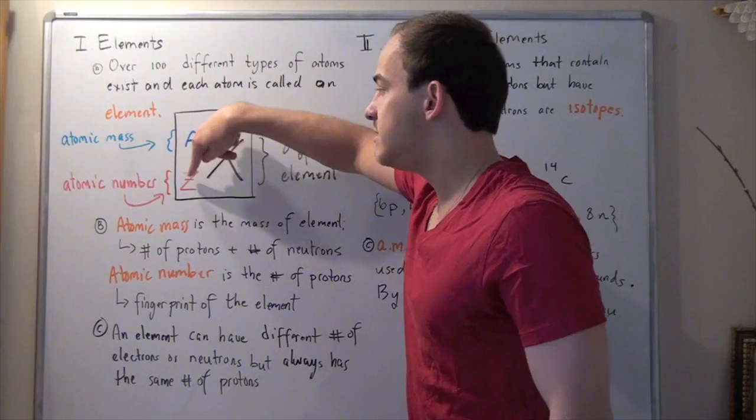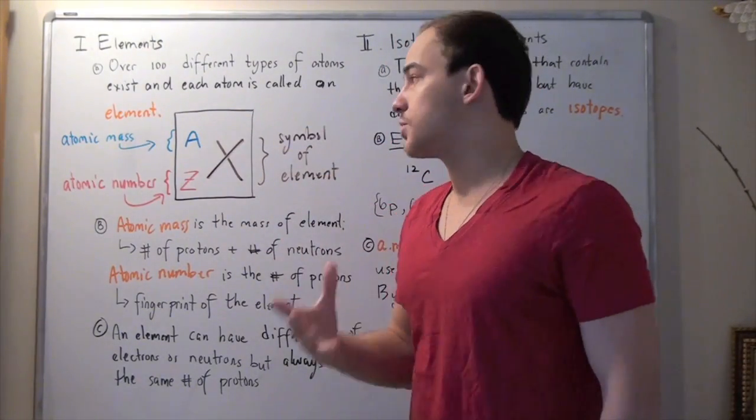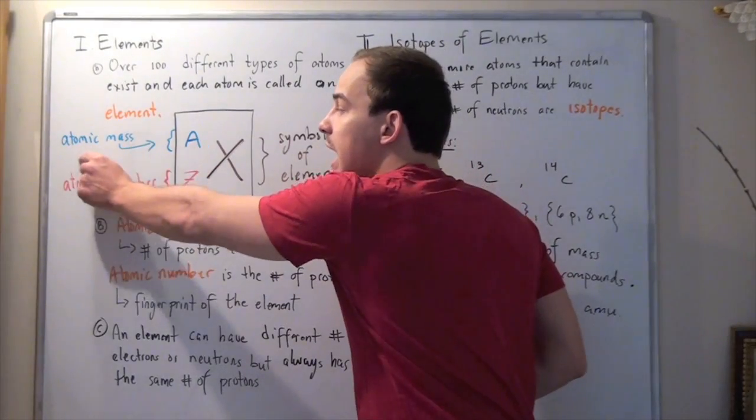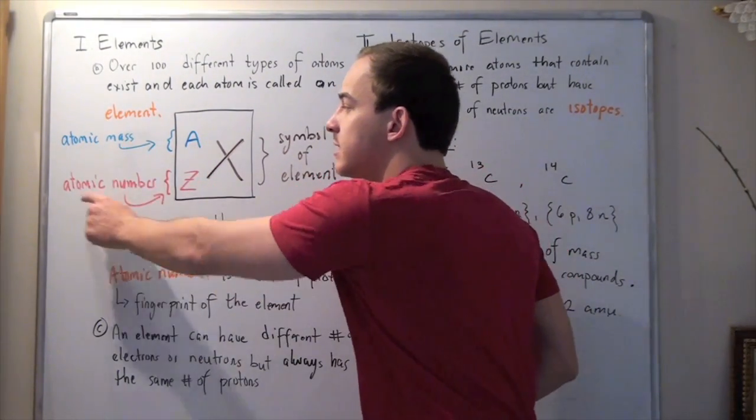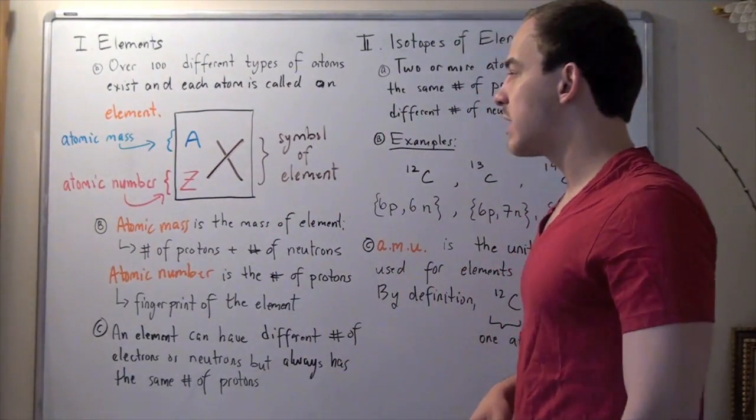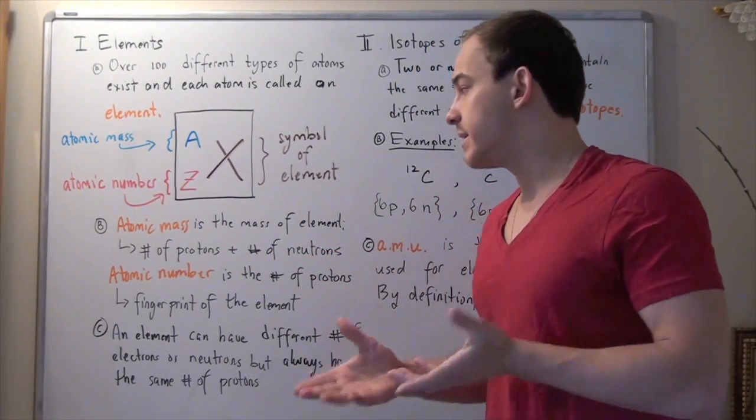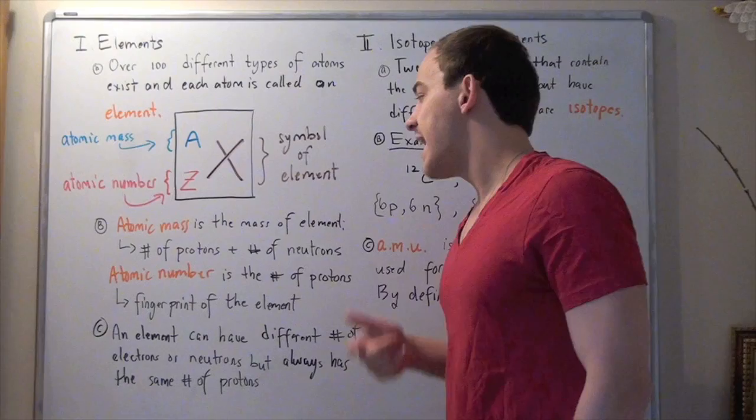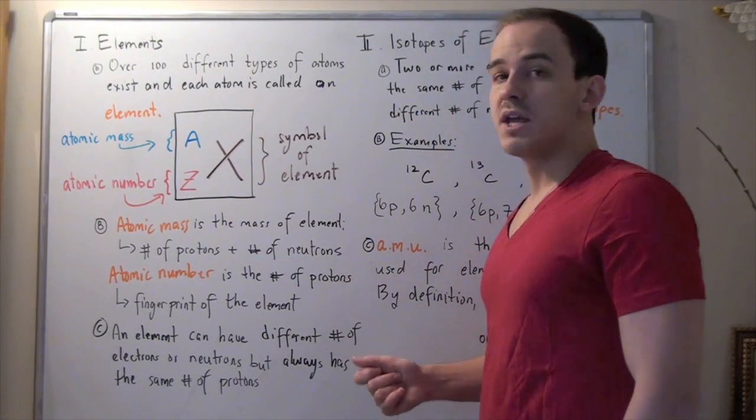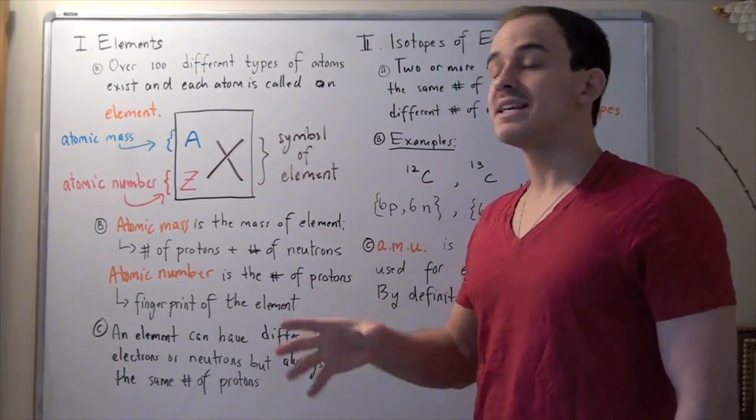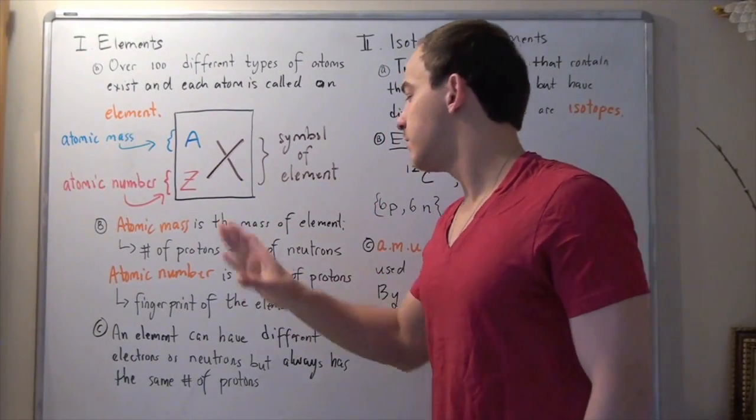This A and this Z are usually numbers, but in this case we're going to use letters. The A is the atomic mass and the Z is the atomic number of our element. The atomic mass is the mass of that element, the number of protons and the number of neutrons. Note that electrons are not counted in our atomic mass because their mass is much smaller than that of the proton or the neutron.